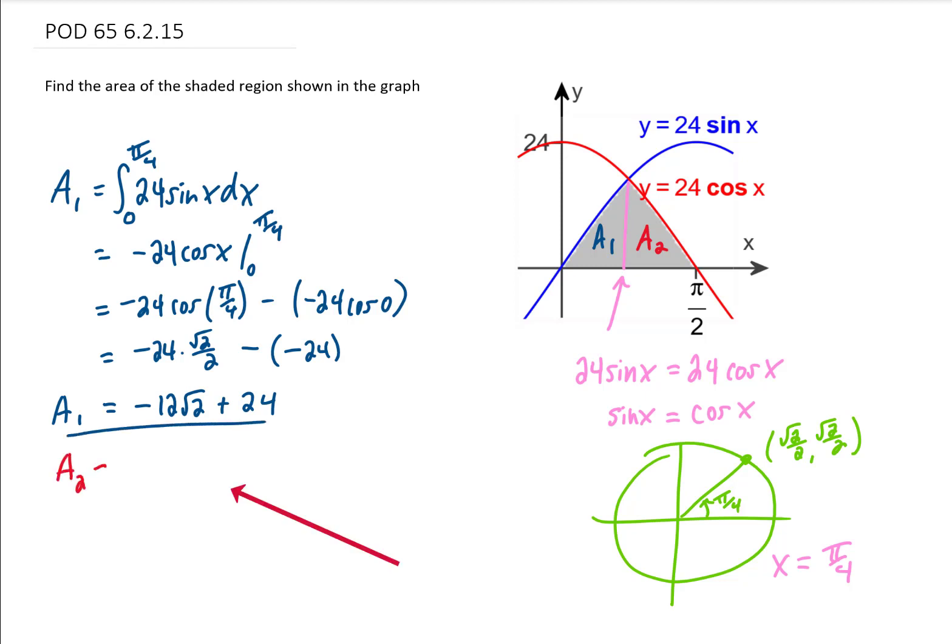Now if we want to find A2 we need to integrate the red function with respect to x from the x values of x equals pi over 4 to pi over 2. And the integral of cosine is positive sine. Plugging in our upper limit of integration, subtracting and plugging in our lower limit of integration.